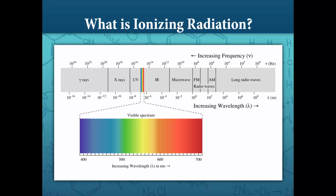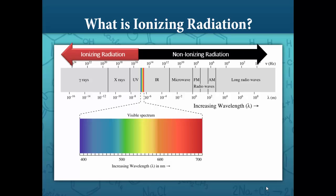On this chart of the electromagnetic spectrum, you can see that ionizing radiation is any radiation that has a higher frequency than visible light such as ultraviolet, x-rays, and gamma rays. To the right of this chart are examples of non-ionizing radiation such as visible light, infrared, microwave, and radio waves.